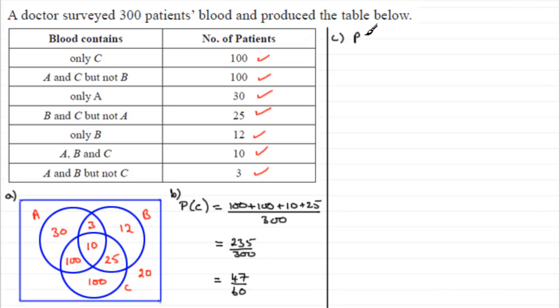So this would be written as the probability of having all three substances, A and B and C, given that we know that that person has substance A in their blood. Now, when you're dealing with Venn diagrams, it's so easy to do questions like this.